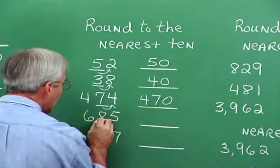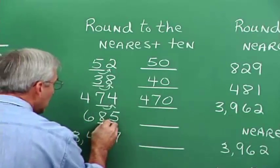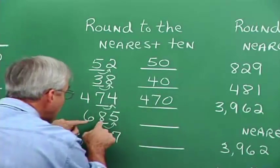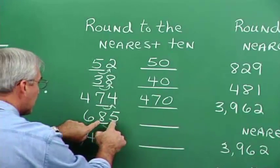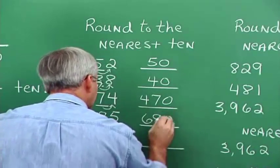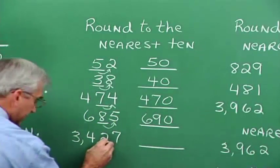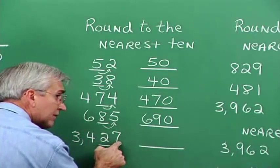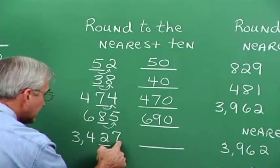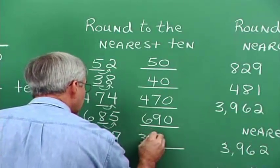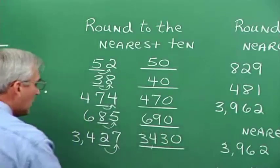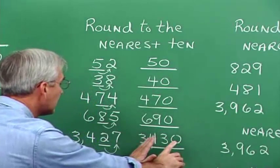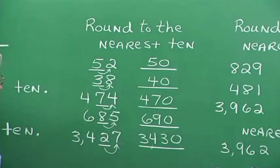For 685 rounded to the nearest 10: look at the digit to the right of the tens digit — it is 5 or bigger than 5. So we make the tens digit one larger and make the ones digit a 0. Result: 690. Similarly for 3,435 to the nearest 10: look at the next digit, it's 5 or bigger, so we make that digit one larger and put a 0 — giving 3,440. Notice that the 3 and the 4 here just tag along; they don't play a role in this particular rounding step.